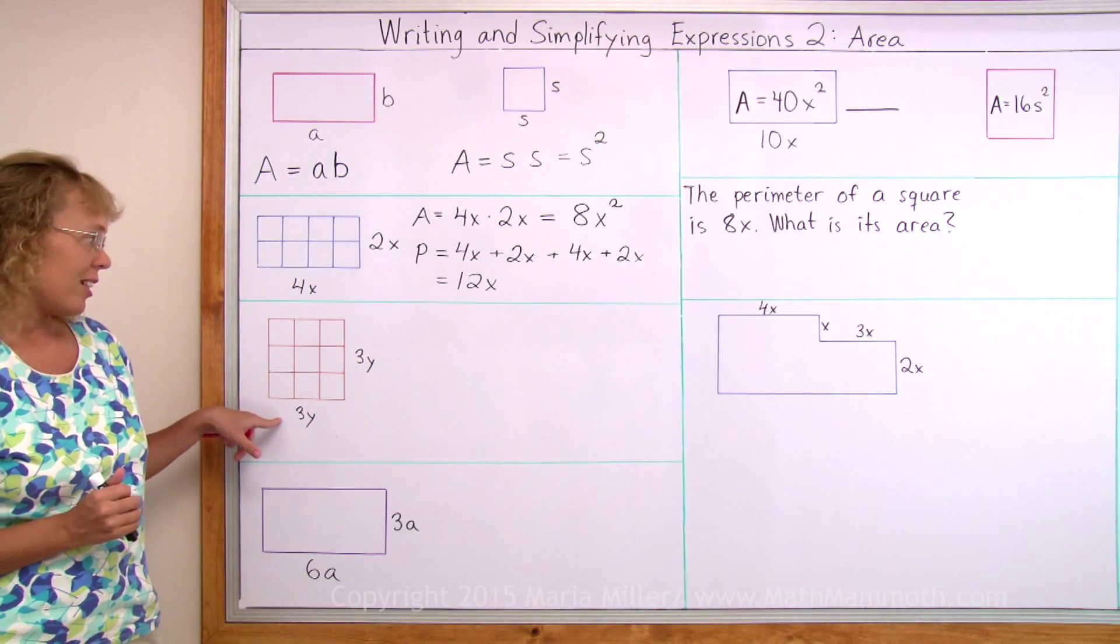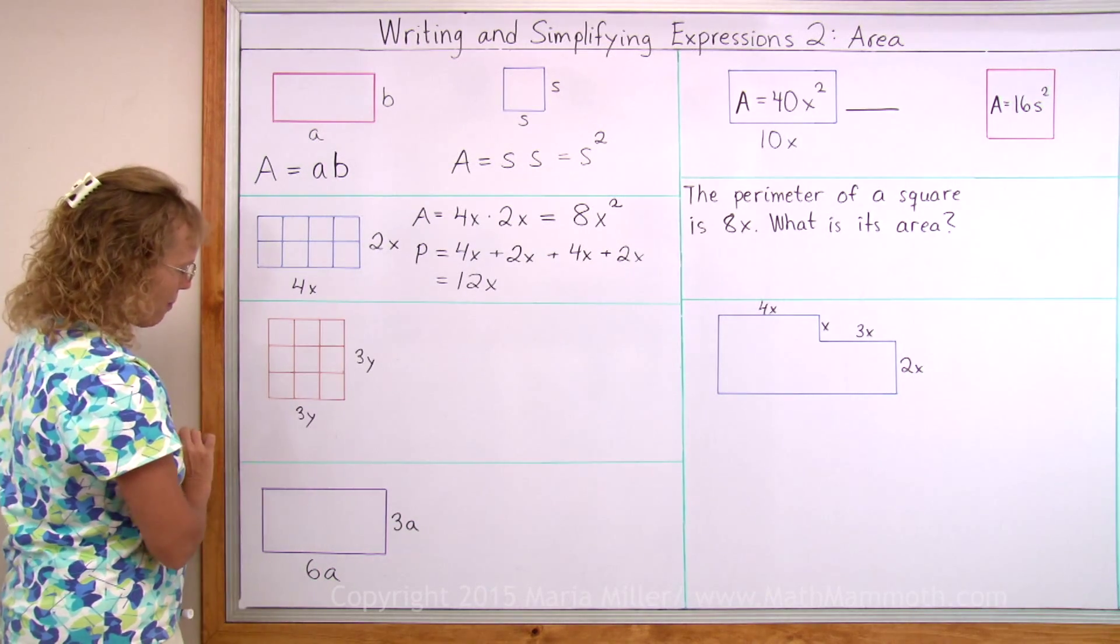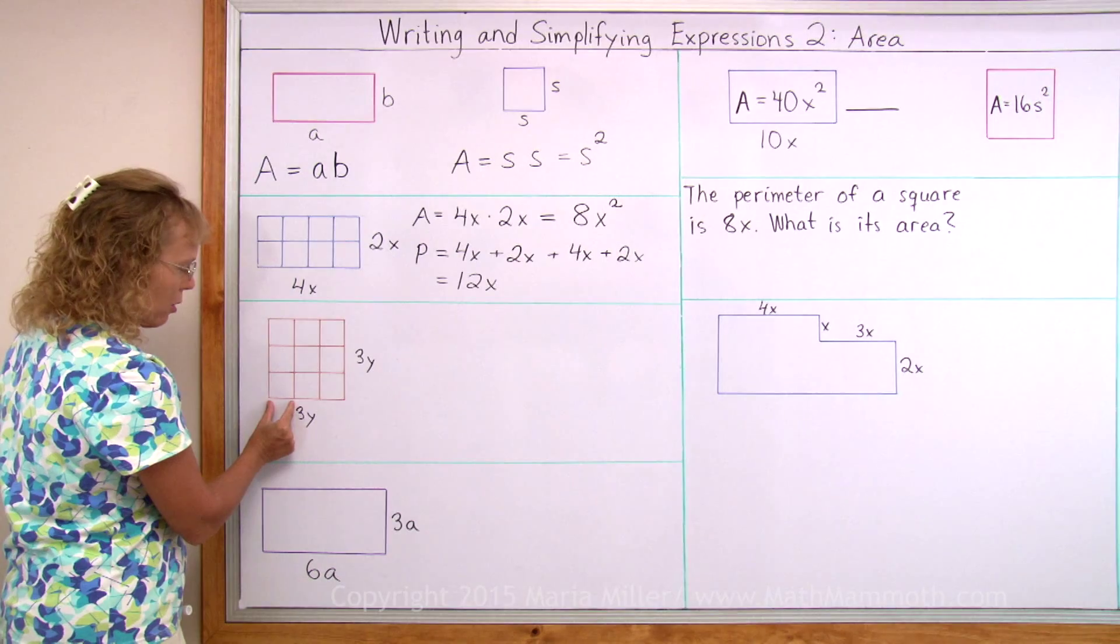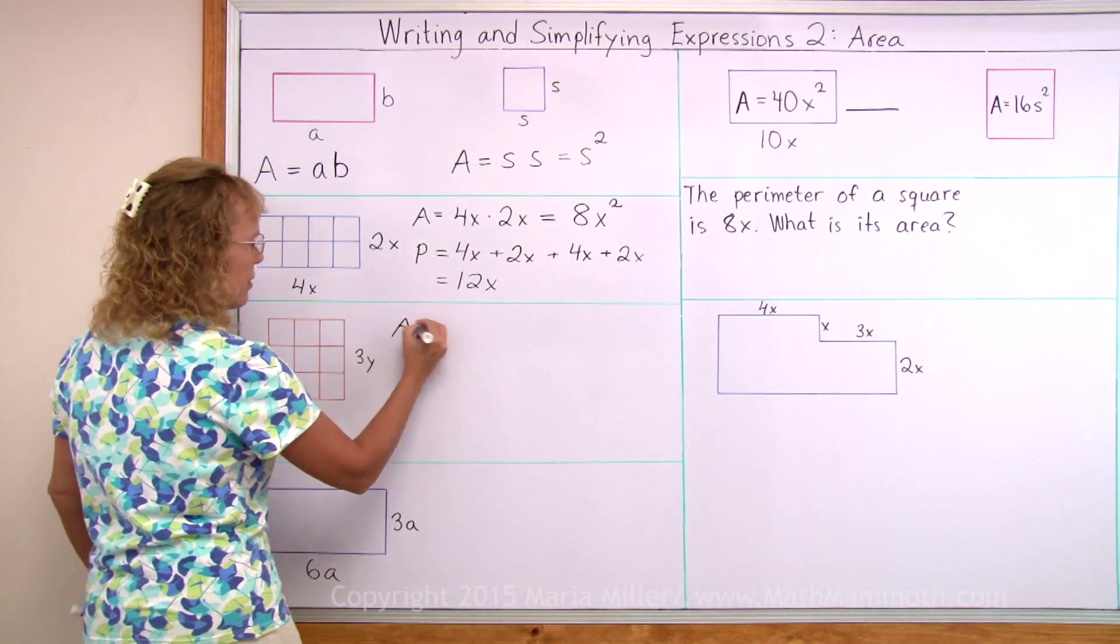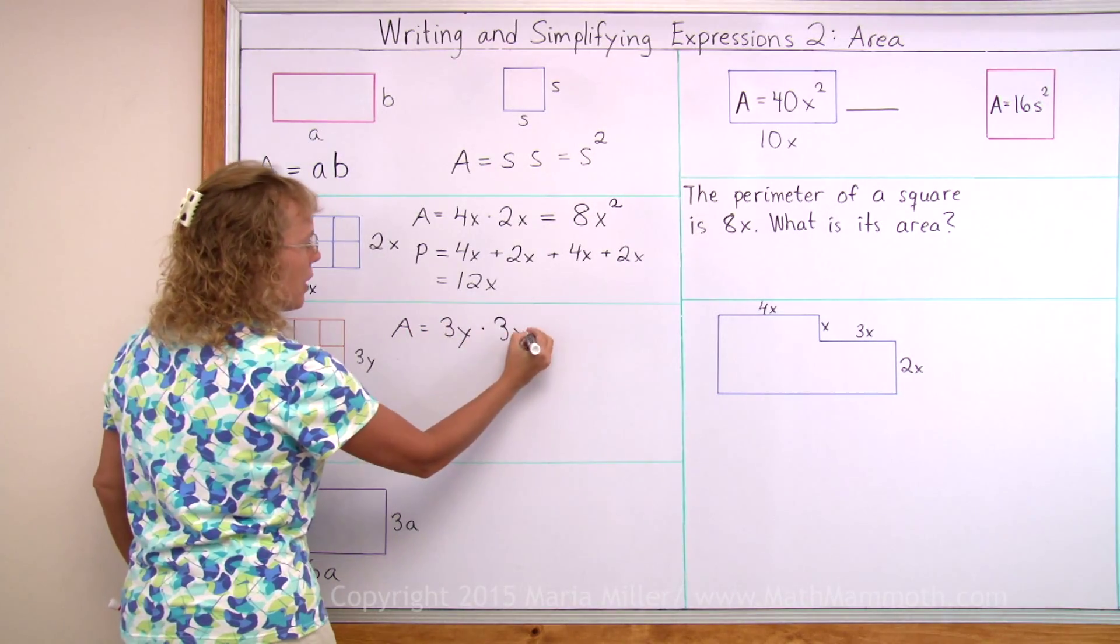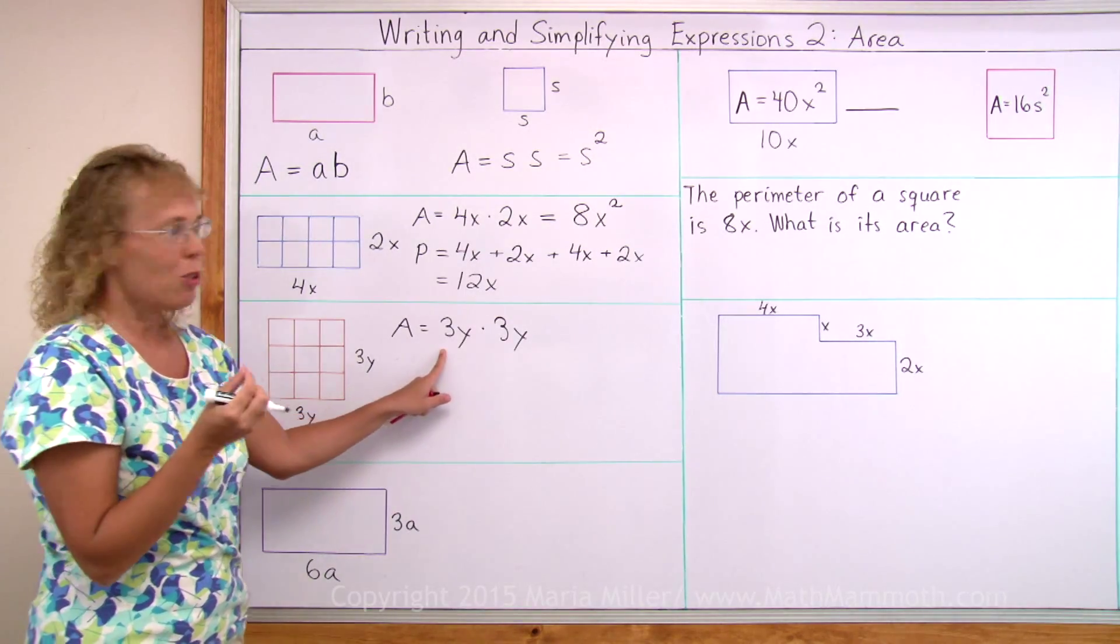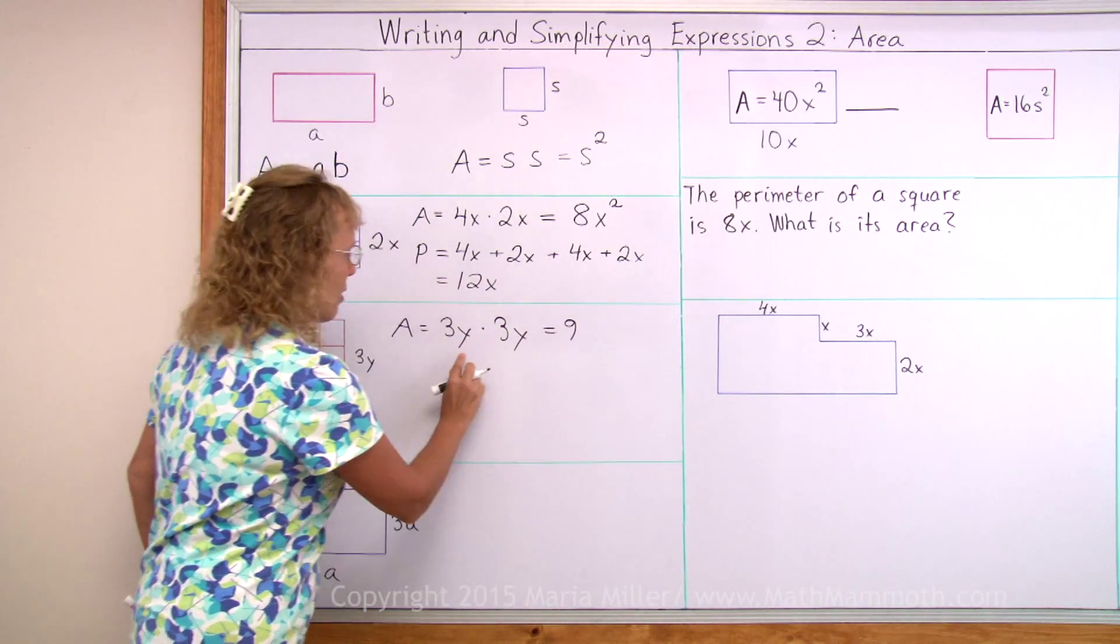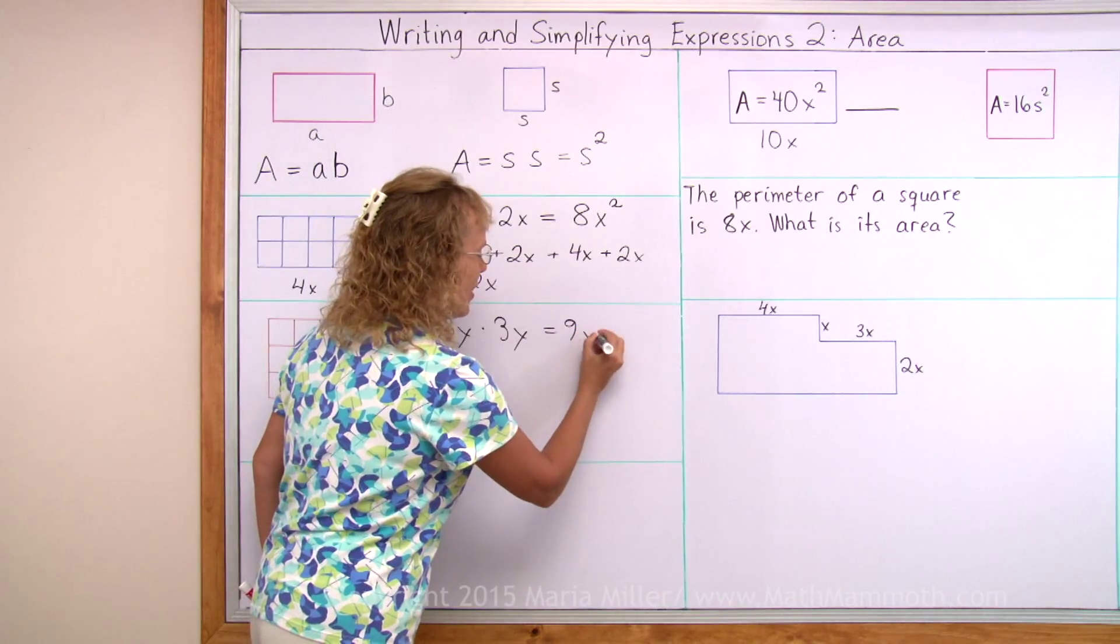Let's calculate the area one more time here. This side is 3y. This side 3y. Again, this little unit here would be exactly y long, making 3y for the length. The area equals 3y, one side, times the other side. Now how would we simplify that? I can multiply in any order. 3 times 3 gives me 9. And y times y gives me y squared.